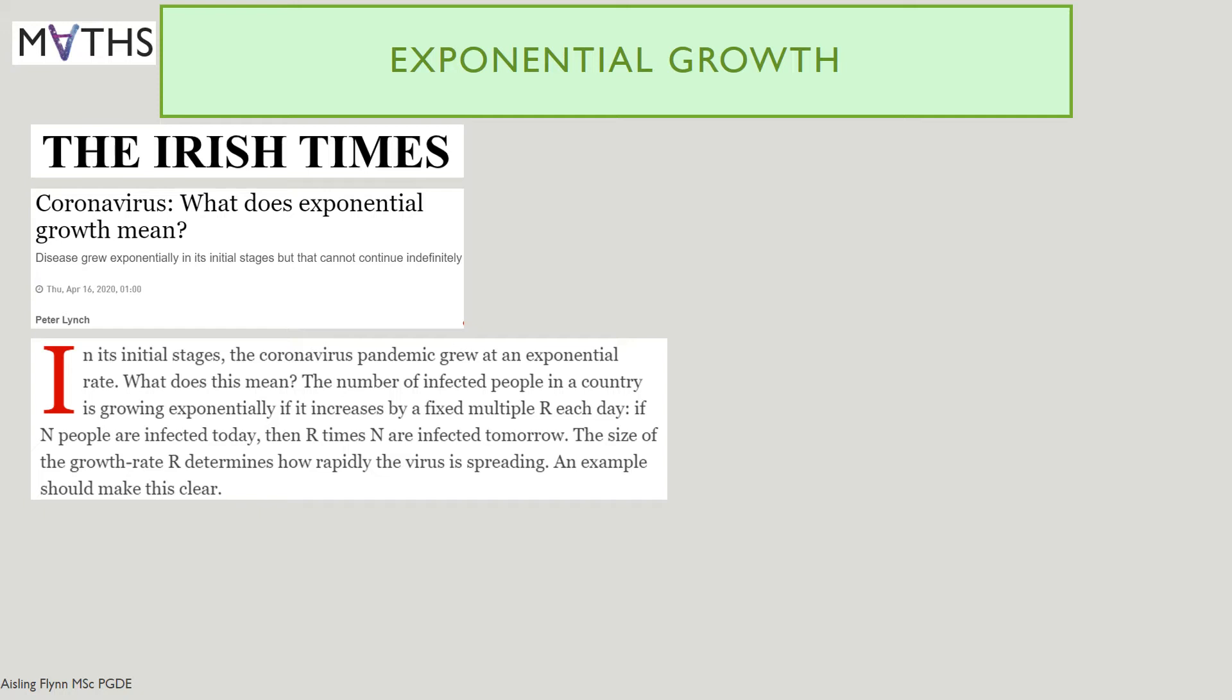We all know what that means, but we're going to look mathematically at what it means today. The number of infected people in a country is growing exponentially if it increases by a fixed multiple each day, which is R each day. You may hear about the R number in the news. If N people are infected today, then R times N are infected tomorrow. The size of the growth rate R determines how rapidly the virus is spreading.